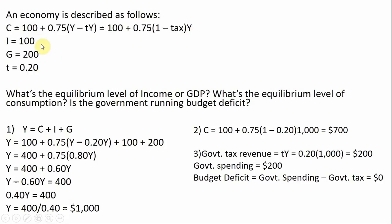We also have investment spending at 100 and government spending at 200. Given this setup, we can answer these three questions: What's the equilibrium level of income or GDP in this economy? What's the equilibrium level of consumption? And is the government running a budget deficit or surplus?